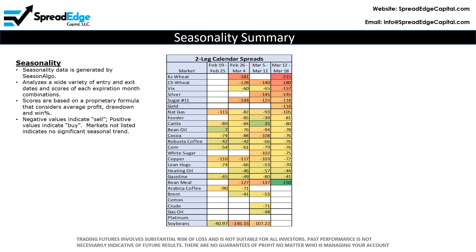Seasonality data is generated by Seasonalgo. Entry and exit dates are analyzed and scored for every possible expiration month combination. Scores are based on a proprietary formula that considers average profit, drawdown, and win percent over the most recent 15-year period. Negative values indicate sell, positive indicate buy, blanks indicate no significant seasonal trend. The higher the value, the stronger the historical seasonality trend.